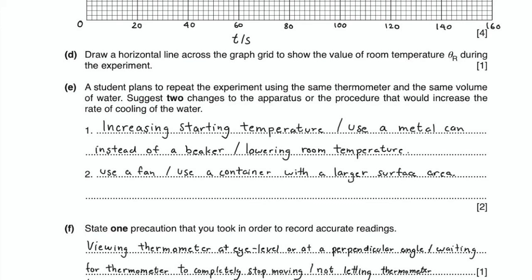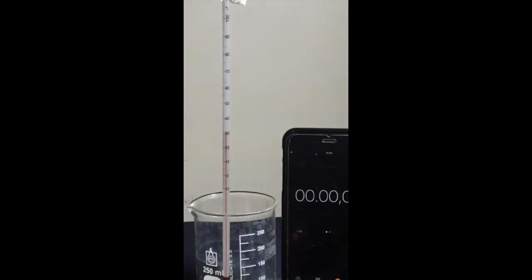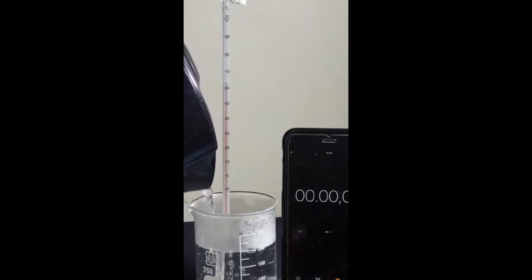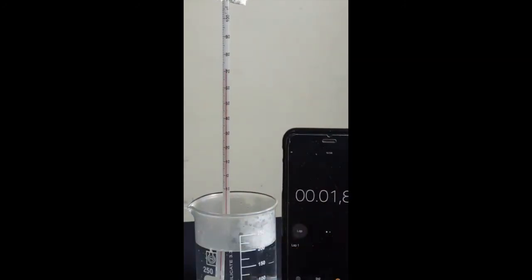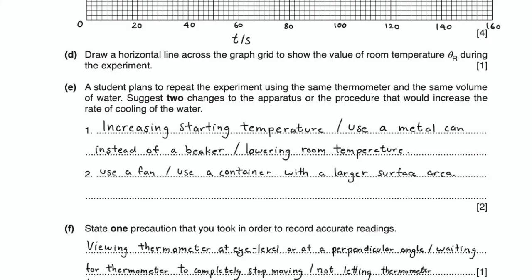Question E asks us to suggest two changes to the apparatus or procedure that will increase the rate of cooling. One answer can be to increase the starting temperature. When I repeated the same experiment with a starting temperature of 71 degrees Celsius, the rate of cooling was less compared to the starting temperature of 84 degrees Celsius.